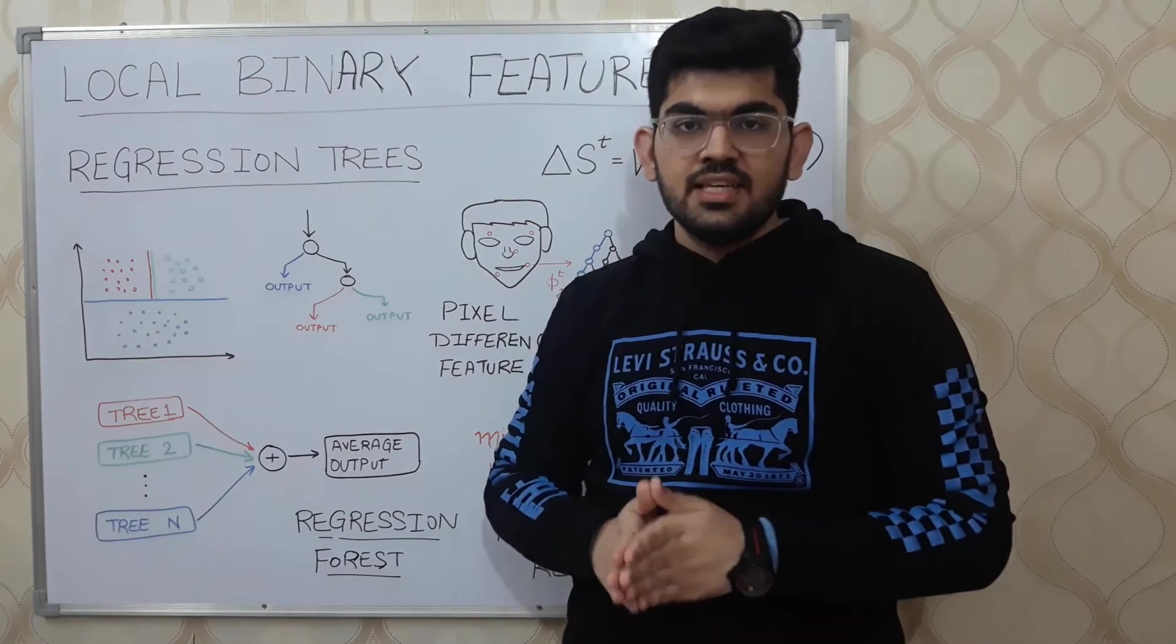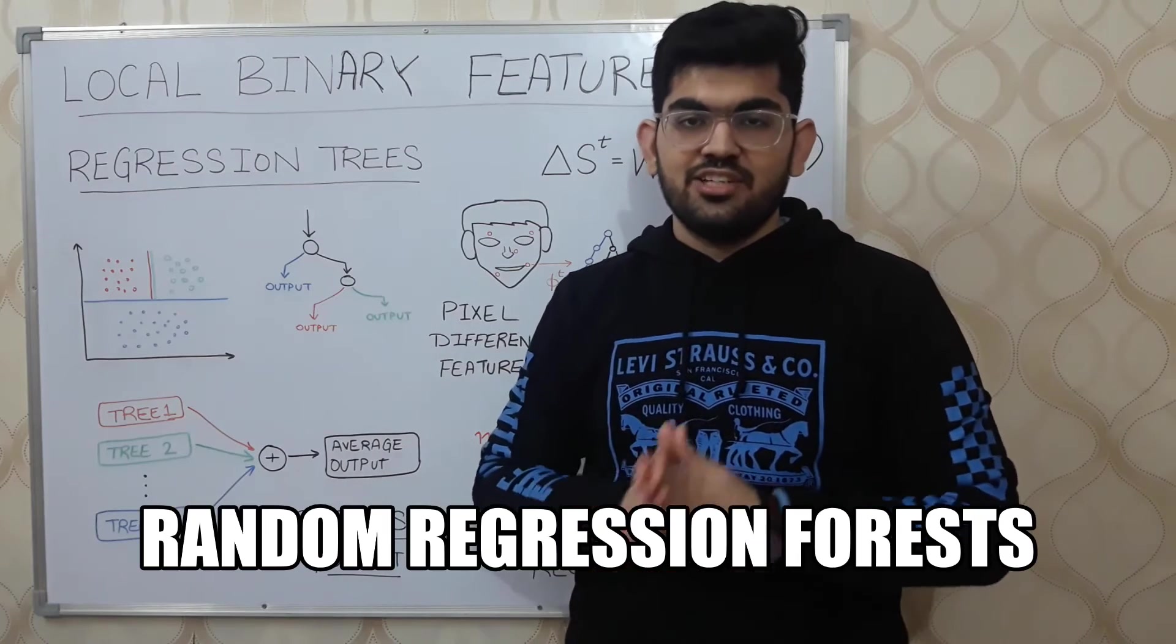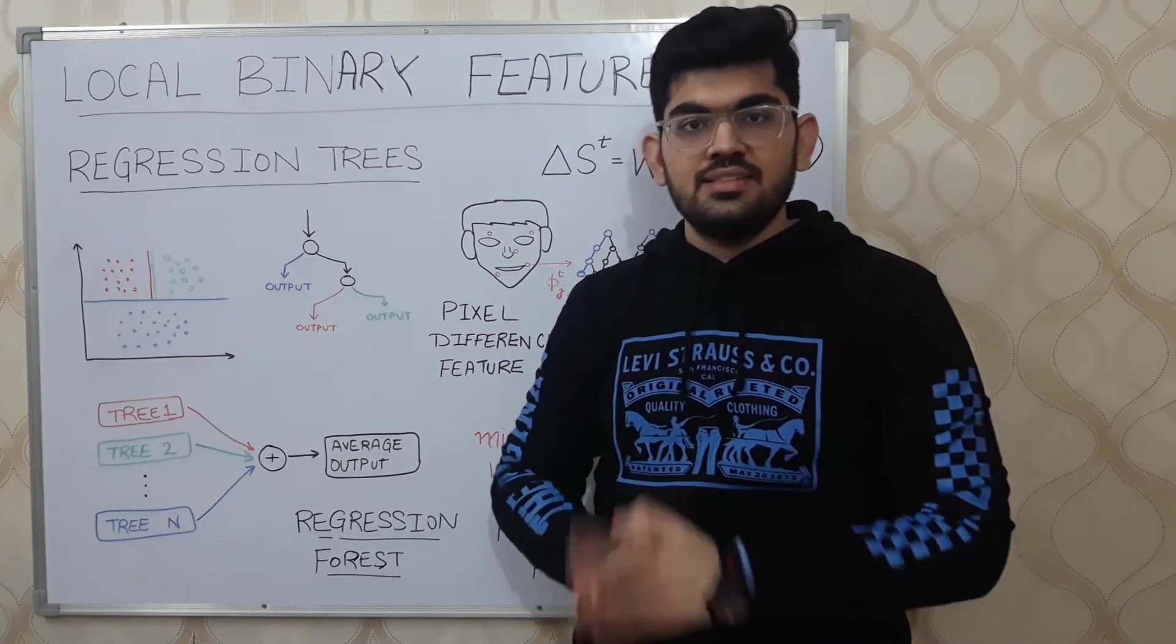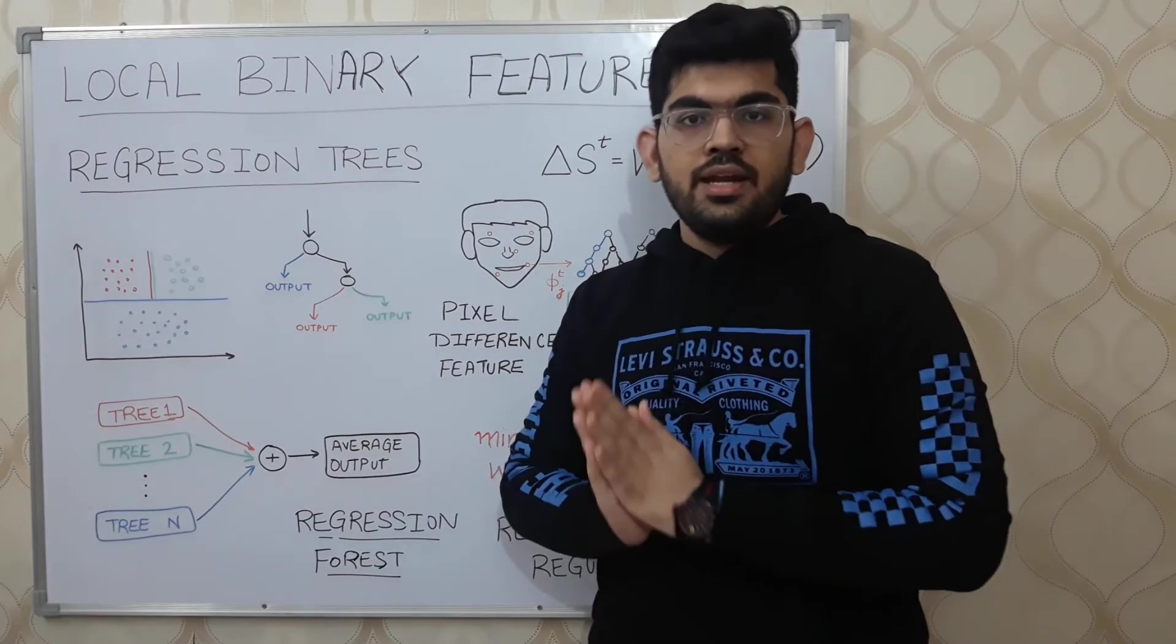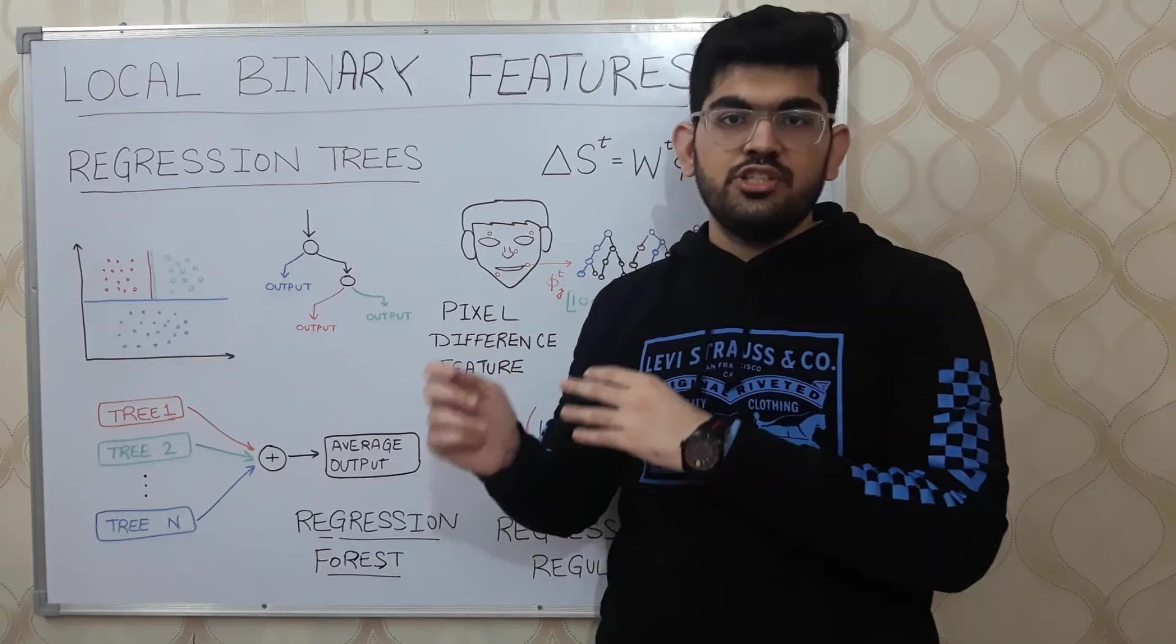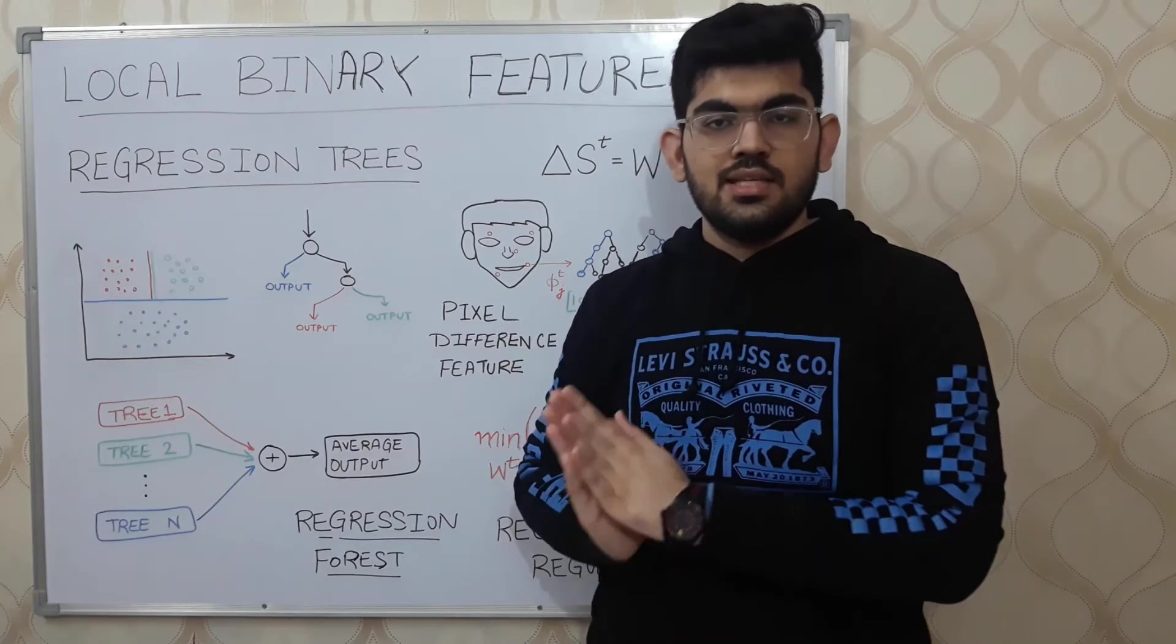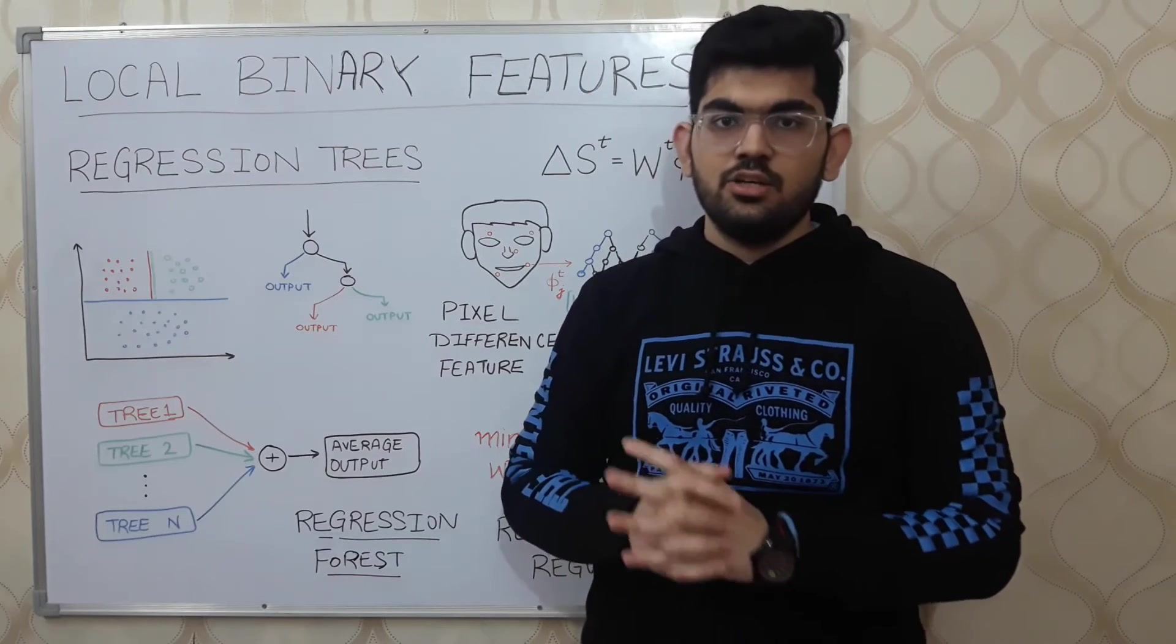In order to deal with this, we have an extension to the regression trees called random regression forest. Random regression forest is an ensemble of regression trees. In simple words, an ensemble is a council of different machine learning models. In an ensemble, given an input, all the machine learning models calculate their own individual predictions and the final output is calculated by taking into account all those predictions. This ensemble model helps in increasing the accuracy and the generalizability of the model.